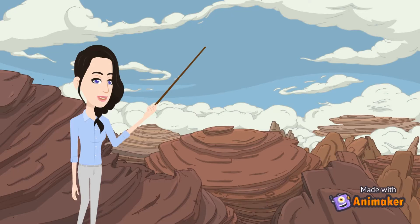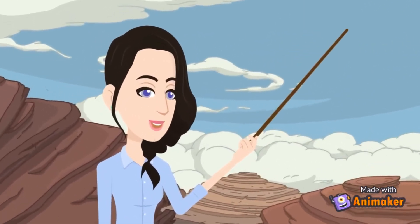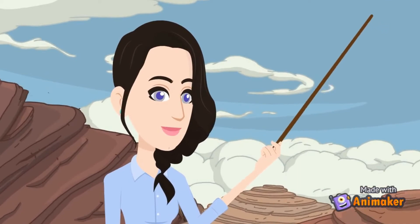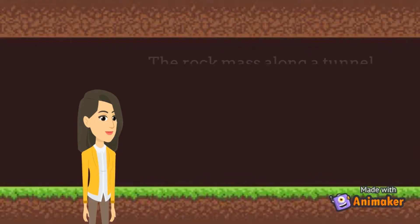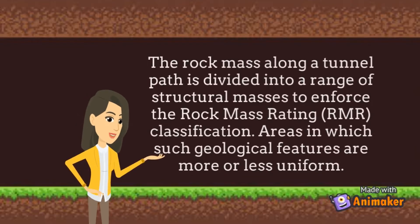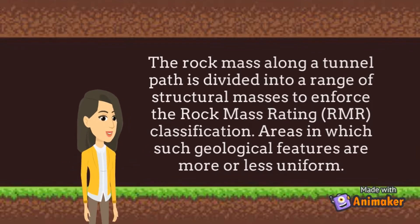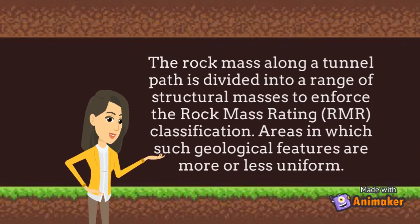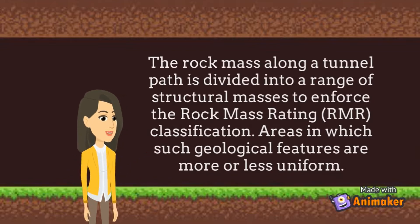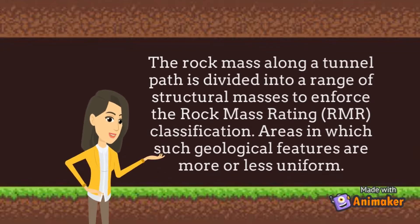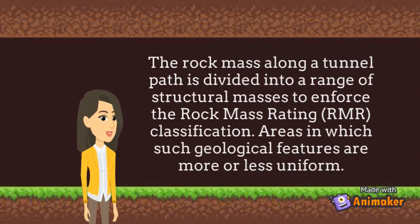The purpose of the study is to contribute to a deeper understanding of the reliability of the two methods of classification. The rock mass along a tunnel path is divided into a range of structural masses to enforce the rock mass rating RMR classification — areas in which such geological features are more or less uniform.